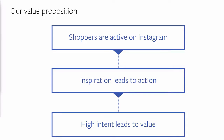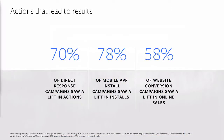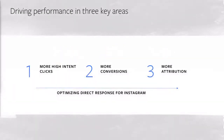Overall, we have seen advertisers successfully use Instagram to achieve direct response objectives. We recently ran a number of lift studies across campaigns. 70% of campaigns saw a lift in individuals who took action. 78% of mobile app install campaigns saw a lift in installs, and 58% of website conversion campaigns saw a lift in online sales — results that closely mirror Facebook mobile feed results. We focus our efforts on three key areas: generating high-intent clicks, driving more conversions, and increasing attribution, especially on mobile.